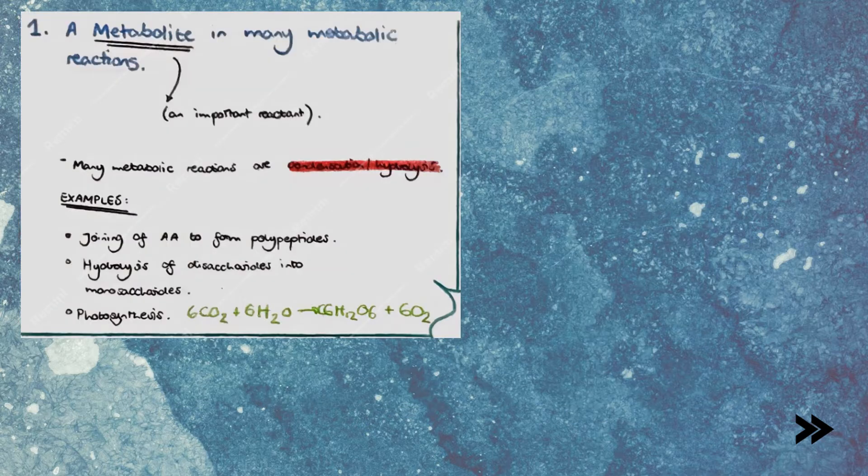First off, water is an important metabolite in many metabolic reactions. Metabolic reactions being reactions that occur within cells. Metabolites are therefore either the reactants or products of metabolic reactions. Many metabolic reactions are either condensation or hydrolysis. For example, the joining of amino acids to form polypeptides is a condensation reaction, or the hydrolysis of disaccharides into monosaccharides.